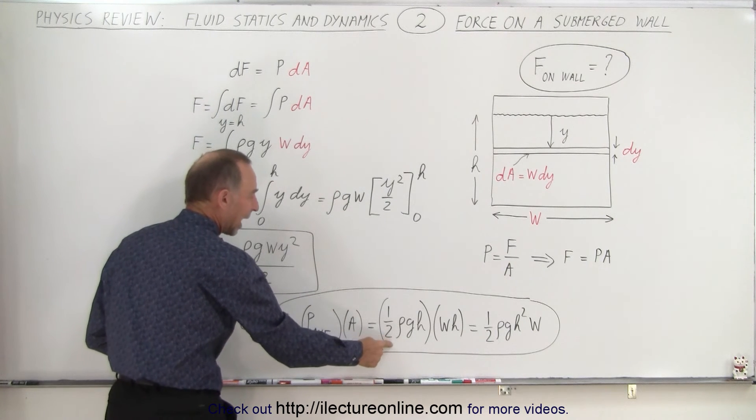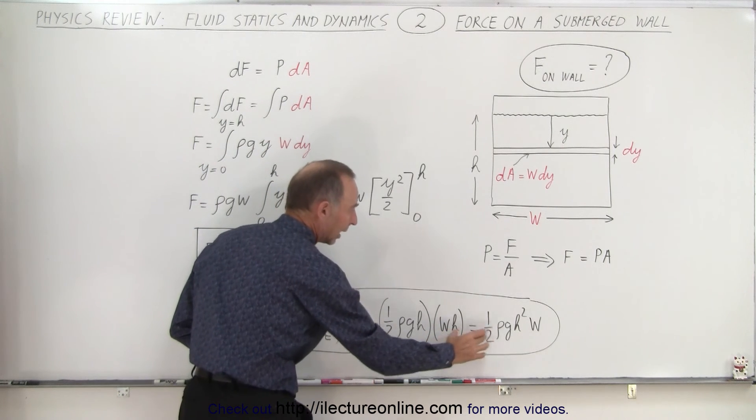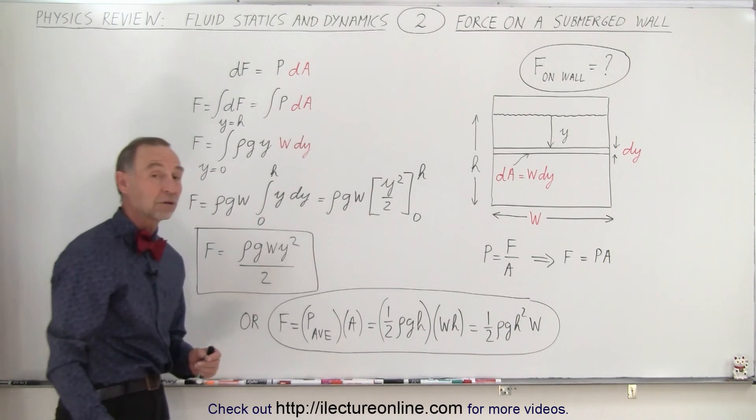And the average pressure would be the pressure at the halfway point, so therefore it would be one half rho g h. That's the average pressure, multiply times the area of the wall, and we end up with the very same equation.